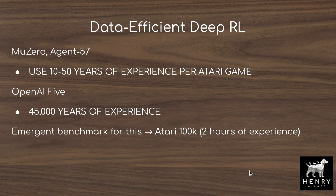Let's motivate the idea of data-efficient reinforcement learning. Algorithms like MuZero and Agent57 use 10 to 50 years of experience per Atari game, and the OpenAI Five Dota 2 algorithm uses 45,000 years of experience. This is obviously undesirable for real-world robots, where we want them to interact with the environment and learn without building perfect simulators or solving the sim-to-real problem.